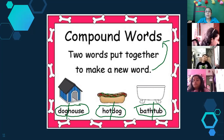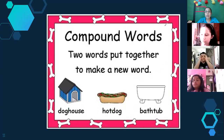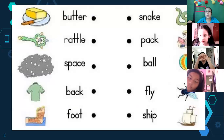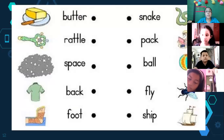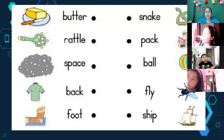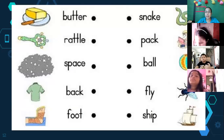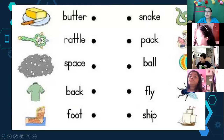Let's continue with compound words. We have this exercise — some drawings and words: butter, rattle, space, back, foot, snake, bow, fly, and ship. You tell me what compound word we can form with these two words.